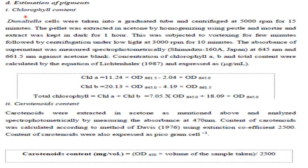For chlorophyll content extraction, Dunaliella cells are taken in a graduated centrifuge tube and centrifuged at 5000 rpm for 15 minutes. The pellets are extracted in acetone by homogenizing using a mortar and pestle, then kept in the dark for one hour. The extract is vortexed for a few minutes, followed by centrifugation under low light at 3000 rpm for 10 minutes. Absorbance of the supernatant is measured spectrophotometrically at 645 nm and 661.5 nm against an acetone blank. Chlorophyll a, b, and total content are calculated by equation and expressed as micrograms per ml.